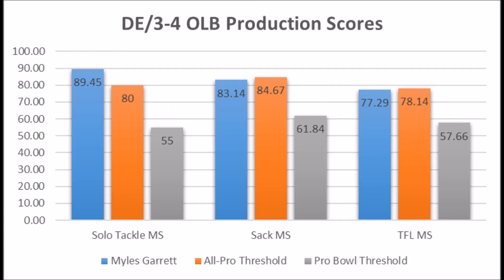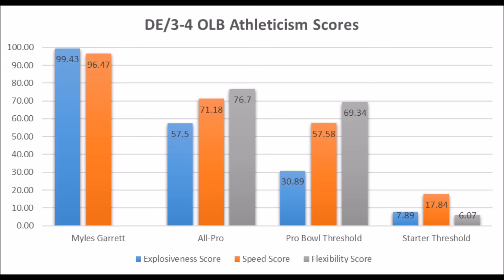Moving to his athleticism data: he has a 99.43 explosive lower body strength score and a 96.47 speed score. Based on my data since the 1999 NFL draft class, he hits every single threshold you could imagine. He hits the explosiveness and speed thresholds for all-pro players and pro bowl players alike.